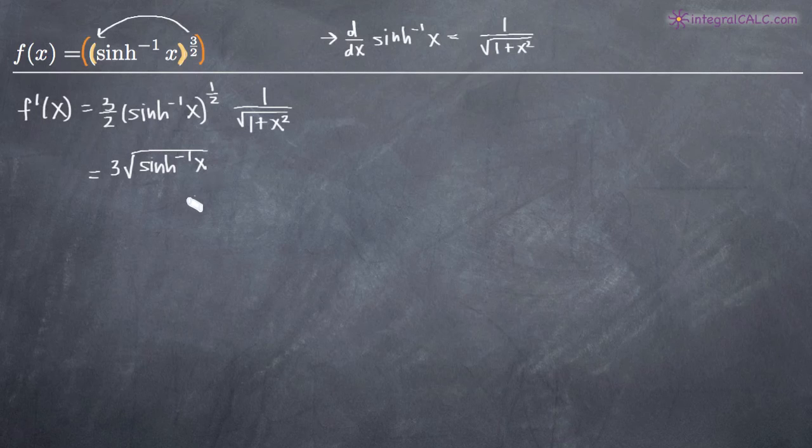So we end up with the square root on top, and then in the denominator, we just have 2 times the square root of 1 plus x squared. Those are the two pieces that we have in our denominator. And that's it. That is our derivative.